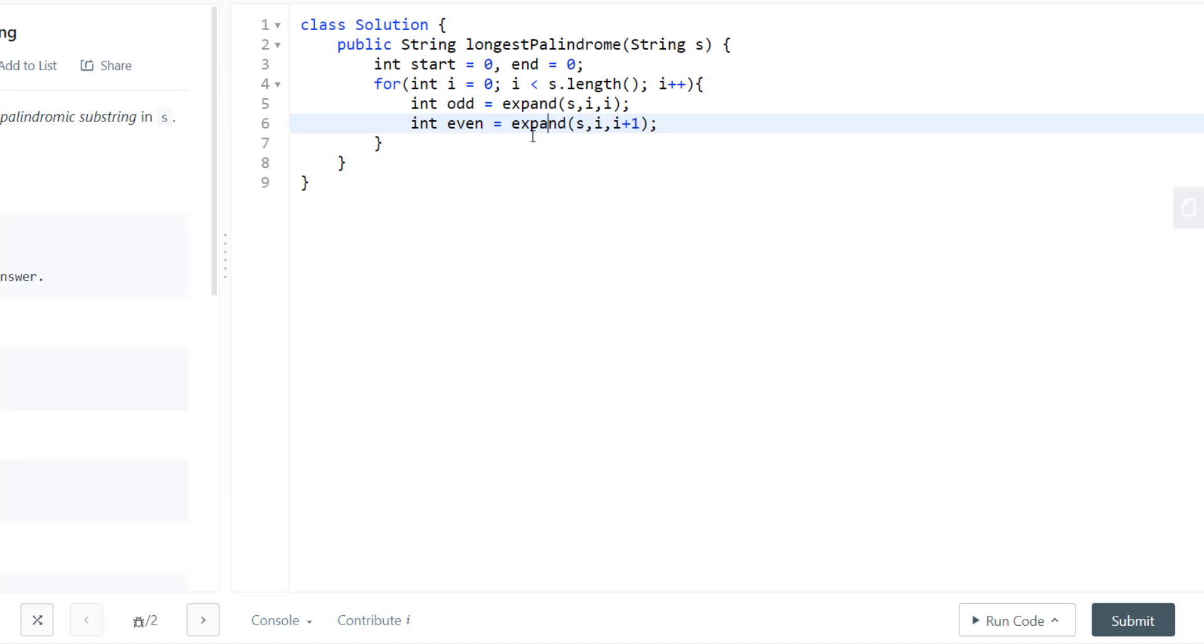So I'll be writing an expand method which would give me the length of the substring for odd length and even length with the center as i or the center as i and i plus 1. After we have this, we can find the actual length that we want to consider. So the length would be the maximum of both even and odd.